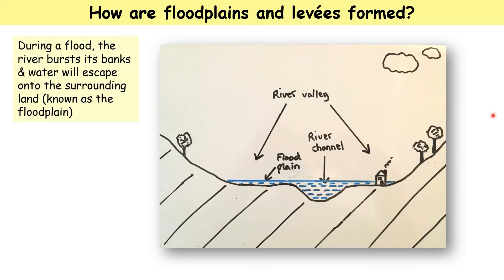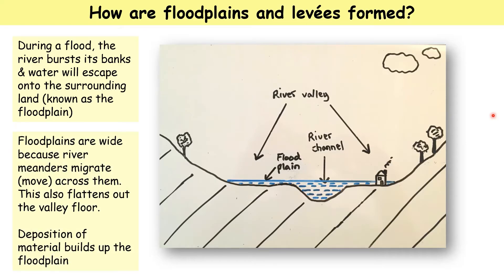So during a flood, the river bursts its banks and water will escape onto the surrounding land. Floodplains are wide because river meanders move or migrate across them, and as the river meanders move across these areas of flat land, it also flattens them out. They're raised because material is deposited on them, which I'm going to discuss in the next part.